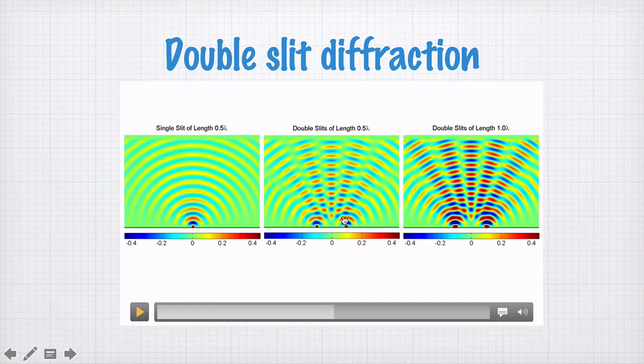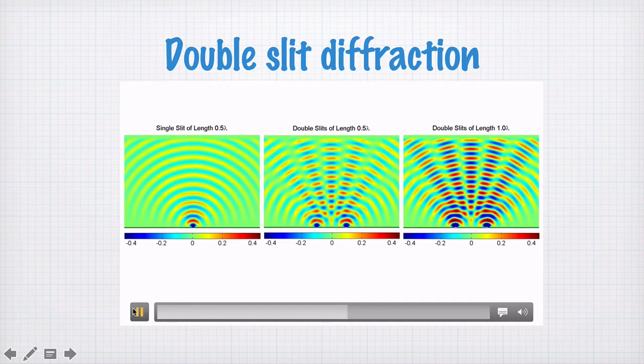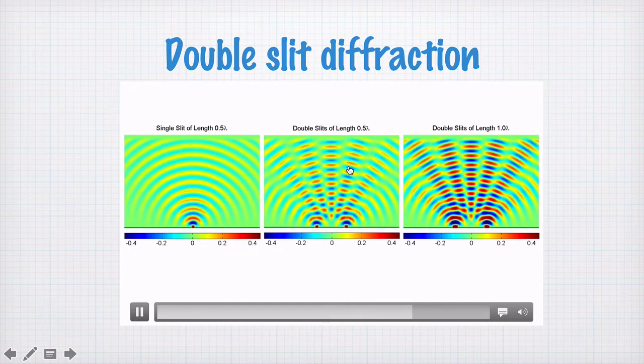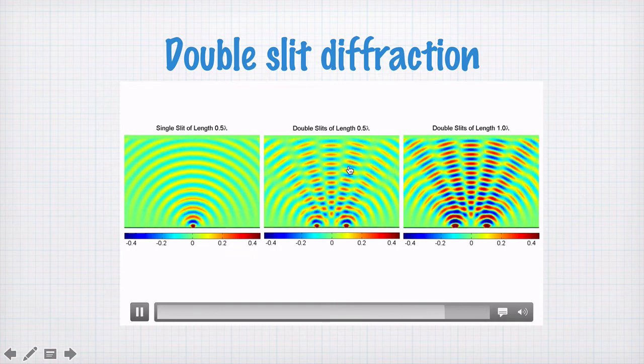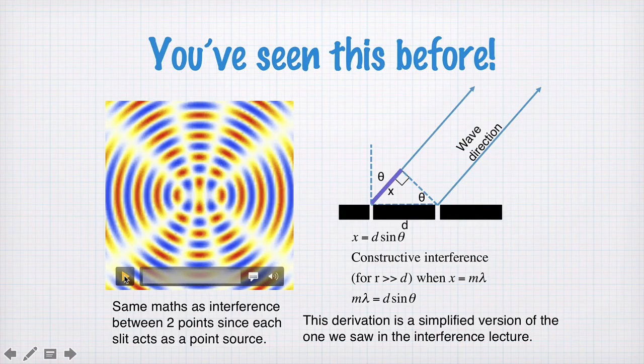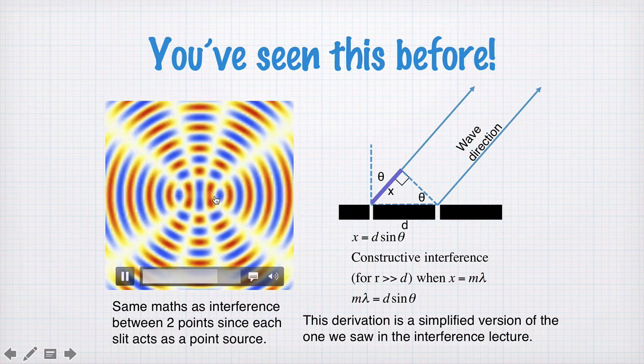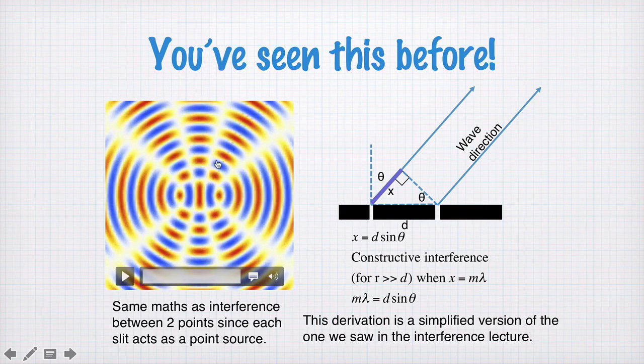This situation, however, is something that we've basically already treated, because if we have two point sources here, this interference pattern is something we've calculated before. In the video about interference, we looked at the interference of two point sources, and this is what it looked like. We calculated the angles for constructive and destructive interference and found the condition for constructive interference in the far field.